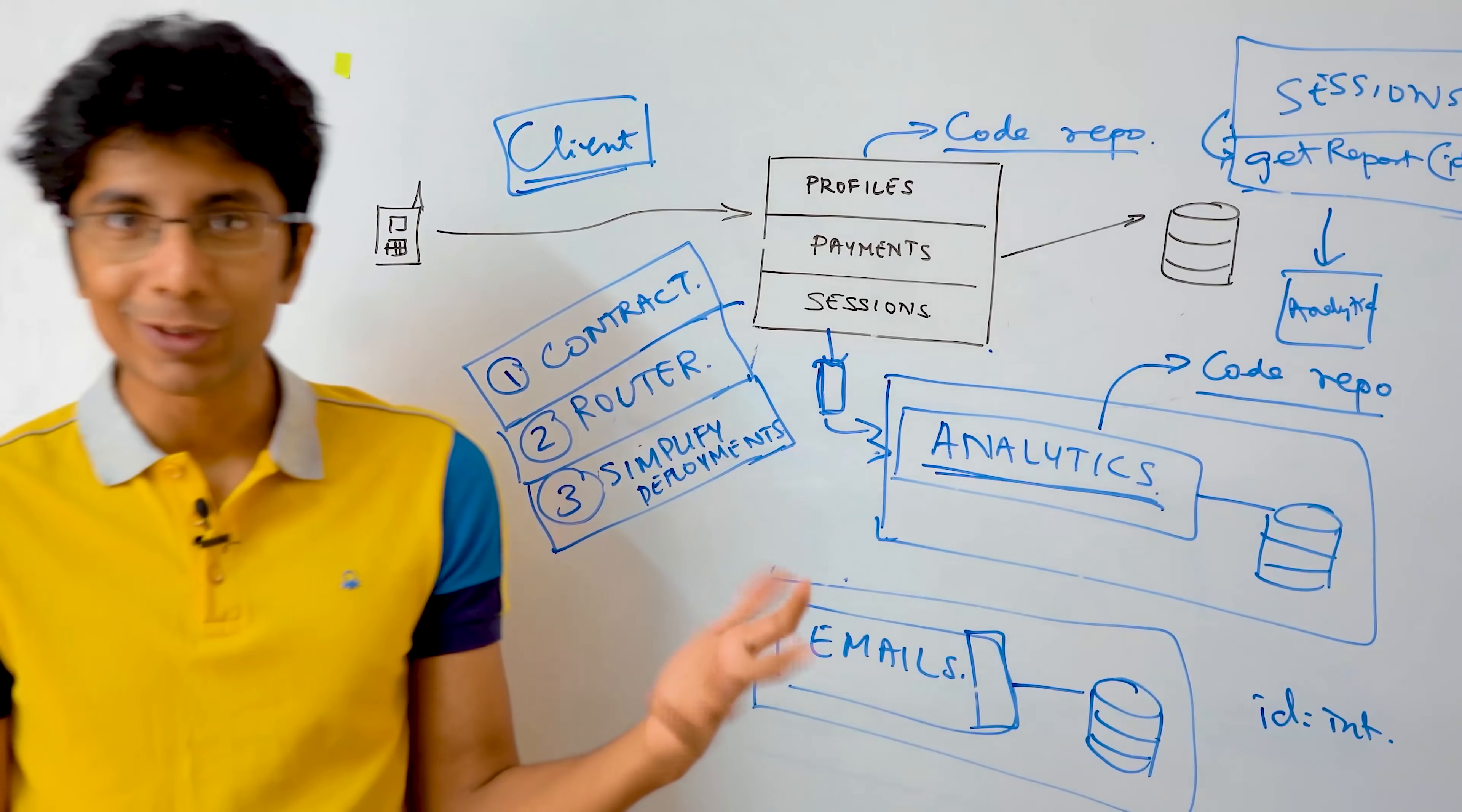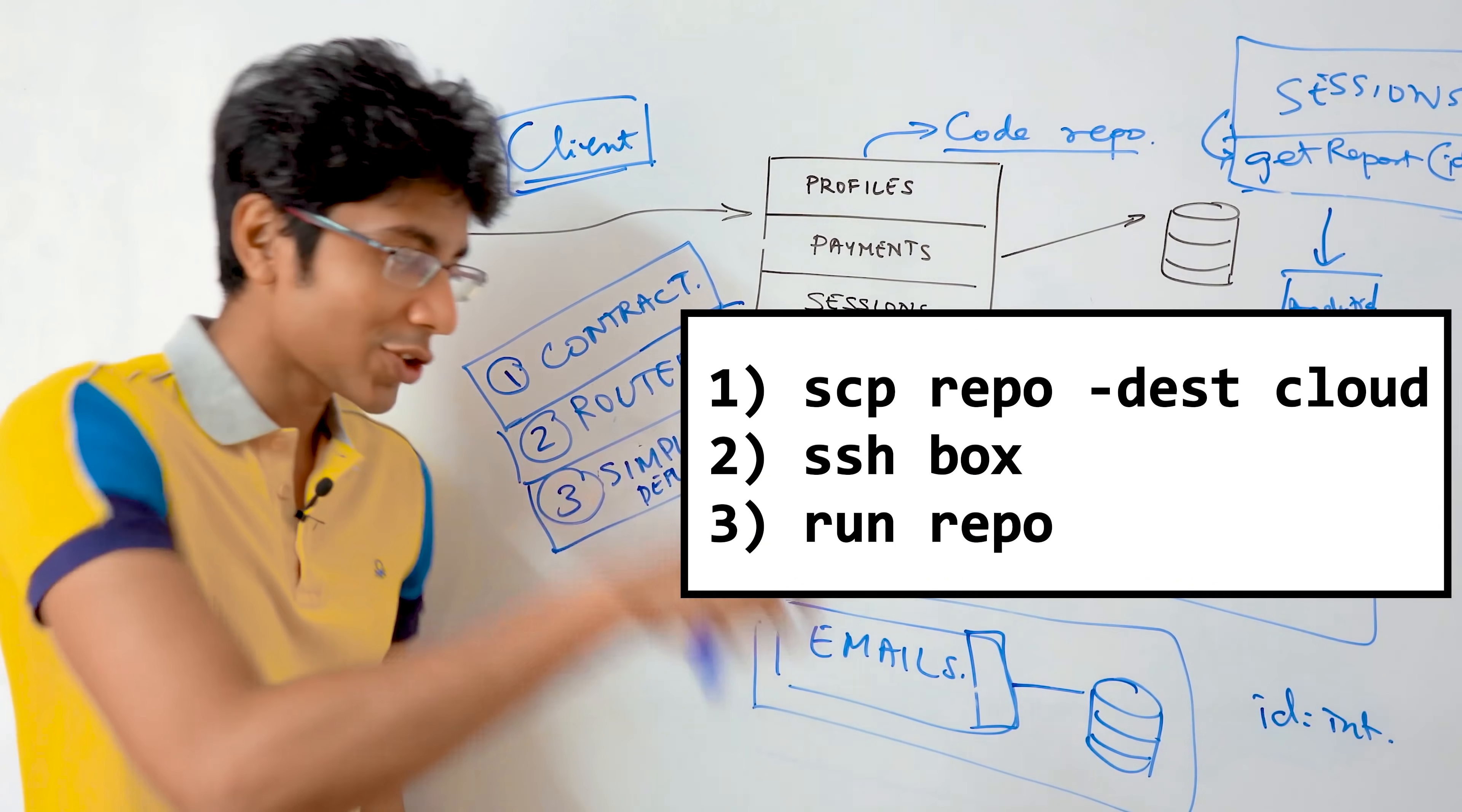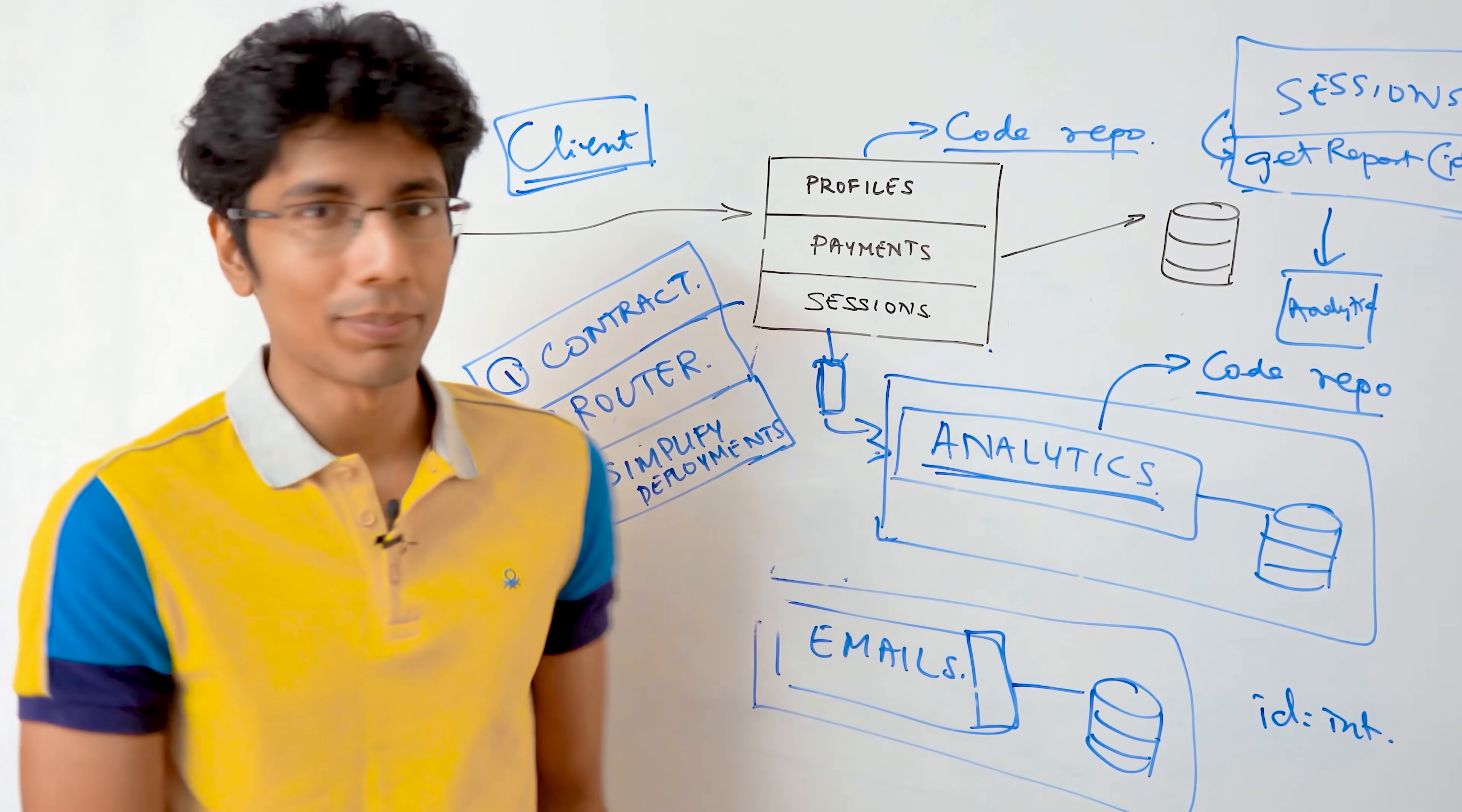The simplest way to deploy any service is to do a SCP, which is copy of the code that you have in your GitHub repo onto an AWS box or a GCP box, then going onto that box and running the service. So literally what you're doing is you're copying your code from one place, keeping it in the cloud server and then running that service by firing a command. But as the number of services in your organization increase, that's not what you want to be doing. You want a more seamless way of things happening.